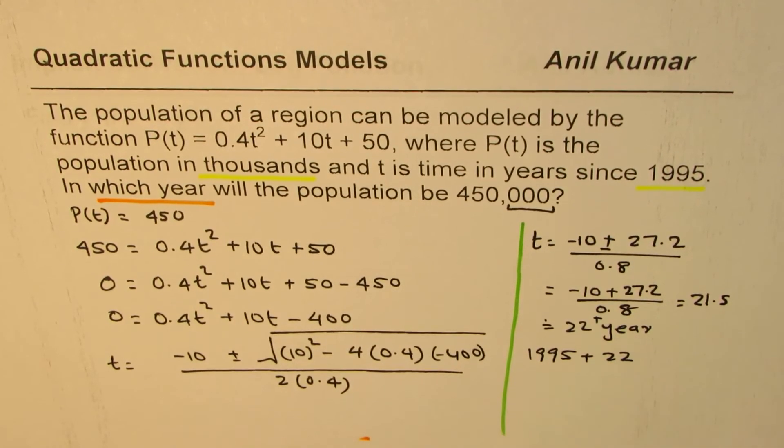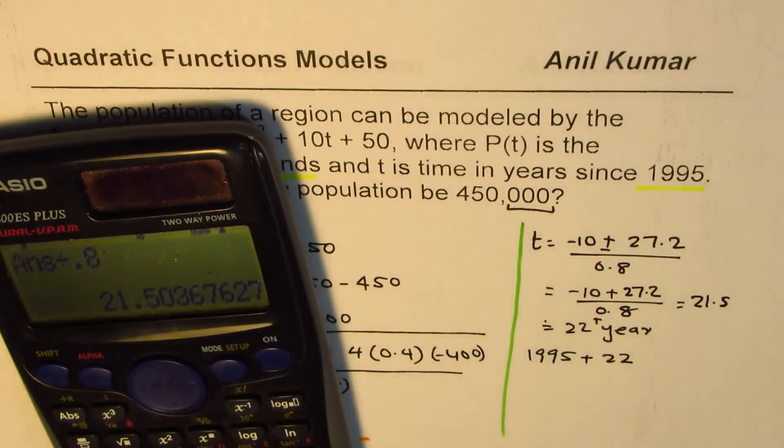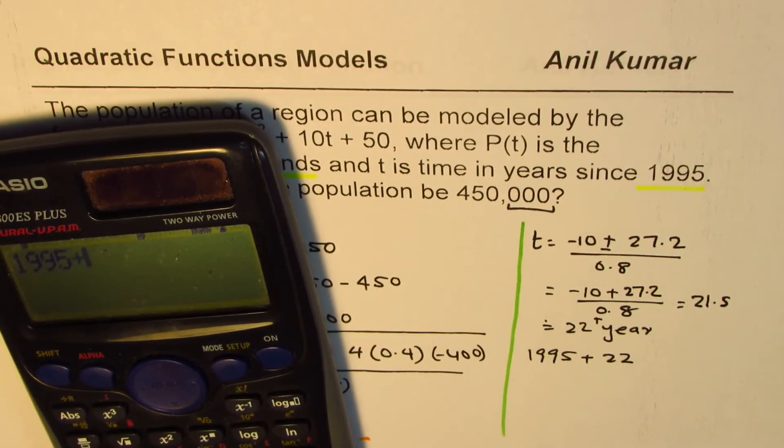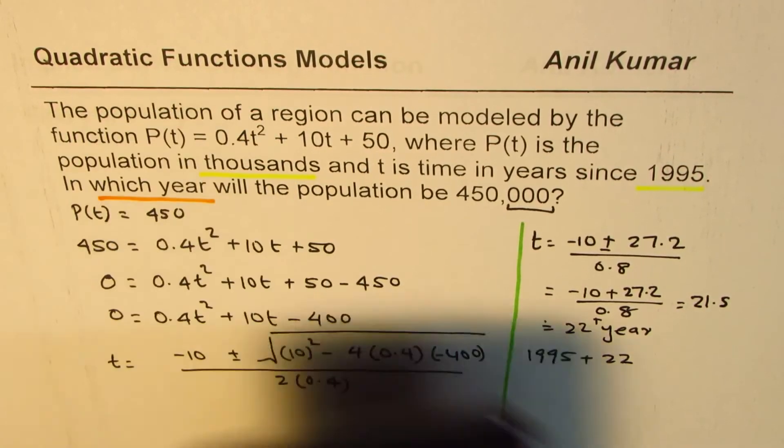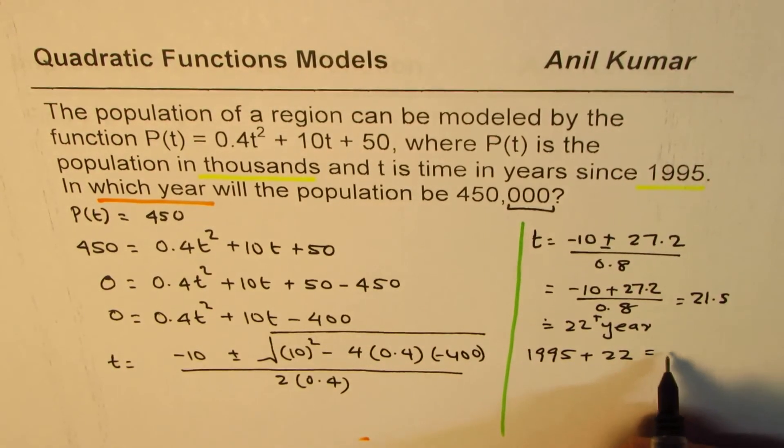So that gives you the answer. It is 1995 plus 22, 2017. So the year is 2017.